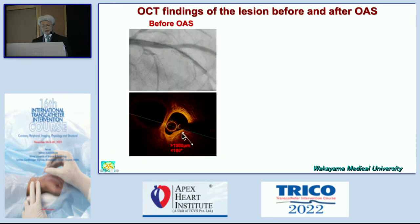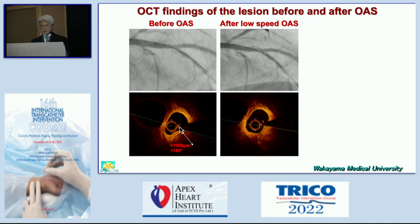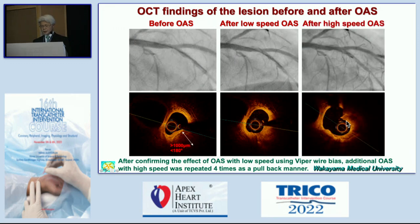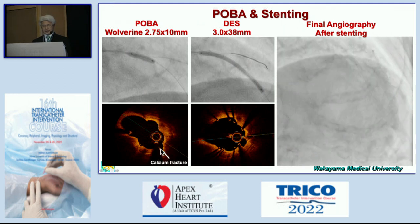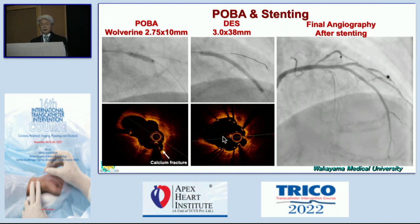This is the stent frame before PCI. We can identify the diagonal branch here, and there is a very thick spotty calcium. If you simply put a stent, carina shift may pinch the diagonal, causing trouble. Therefore, we tried to abrade this portion. The wire bias was favorable, making it easy to abrade during pull-back orbital atherectomy. We confirmed at low speed — you can identify the abrasion portion clearly. After four pull-backs, thickness was reduced to 300–500 microns. We succeeded in making a crack using a high-pressure balloon, then placed the stent with a good result.